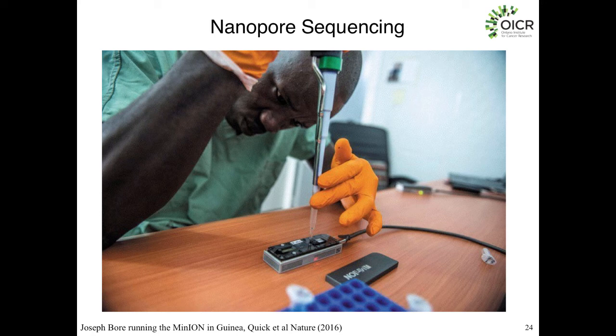Now the nanopore sequencer, because it's portable and relatively stable, you can bring it anywhere in the world and do sequencing directly in place. One of the best examples of this is a project I was involved in — taking the MinION to Guinea in West Africa to sequence Ebola samples directly in field hospitals and clinics during the Ebola outbreak from 2014 to 2016. This was a project led by Nick Lohmann's group in Birmingham, UK, and here our researcher Joseph Bohr is loading a sample onto the MinION for sequencing.